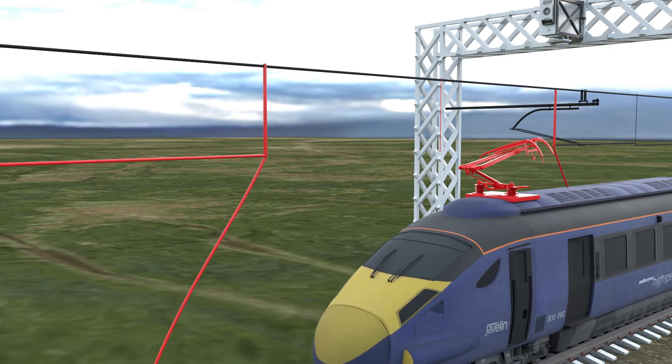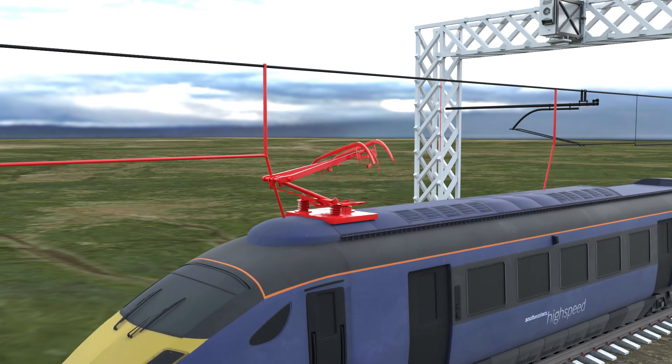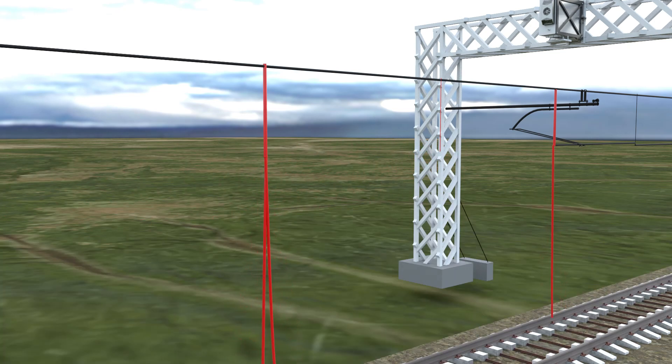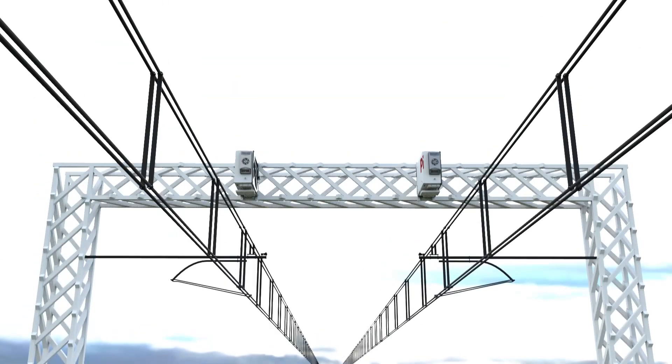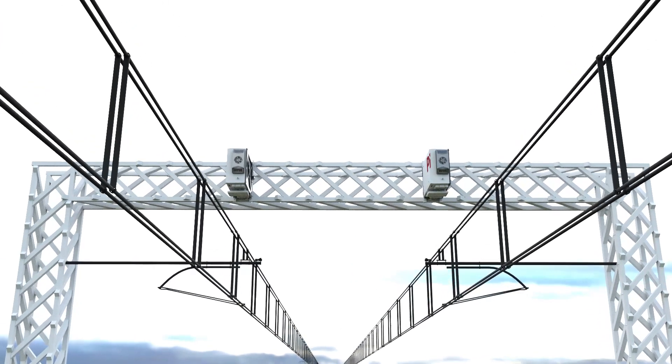A worn out or damaged pantograph can easily cause a teardown of the overhead contact line. This results in high maintenance costs, long traffic disruptions, and unhappy customers.